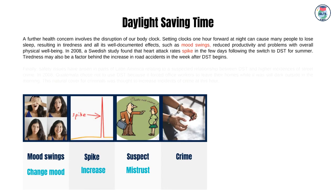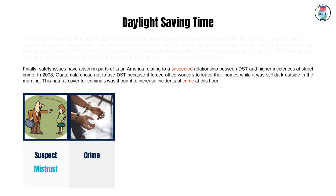A further health concern involves the disruption of our body clock. Setting clocks one hour forward at night can cause many people to lose sleep, resulting in tiredness and all its well-documented effects, such as mood swings, reduced productivity and problems with overall physical well-being. In 2008, a Swedish study found that heart attack rates spike in the few days following the switch to DST for summer. Tiredness may also be a factor behind the increase in road accidents in the week after DST begins. Finally, safety issues have arisen in parts of Latin America relating to a suspected relationship between DST and higher incidences of street crime.